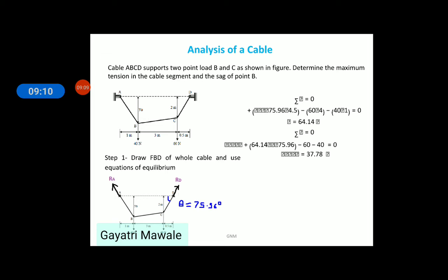Let us solve one problem on cable analysis. Cable ABCD supports two point loads B and C as shown in figure. Determine the maximum tension in cable segment and sag of point B. So, first step is to draw FBD of whole cable. And then, we will use equations of equilibrium.